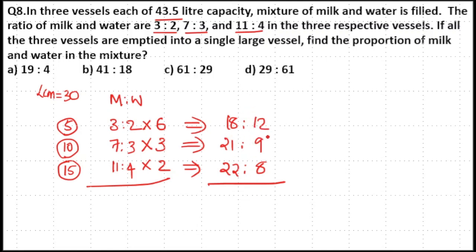That is 12 plus 9, 21, 21 plus 8, 29. Here 18 plus 21 plus 22 is equal to 61.